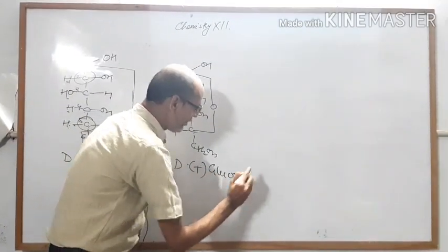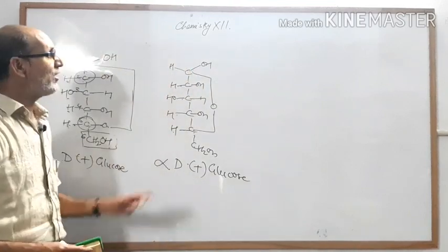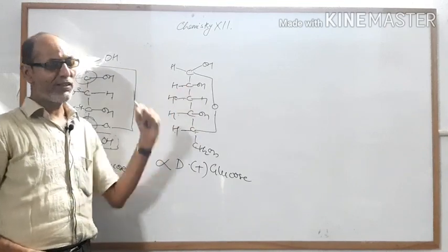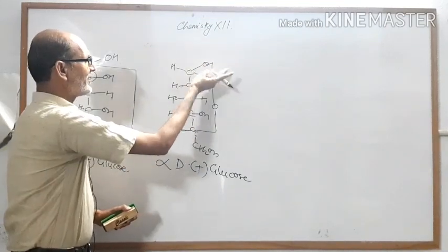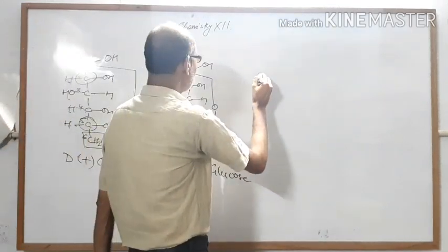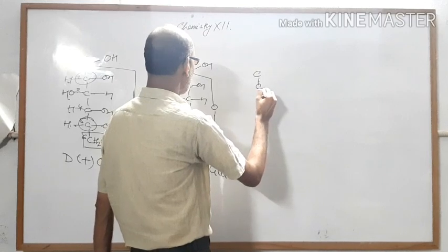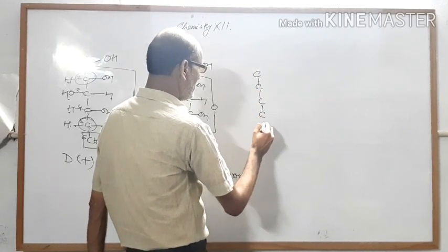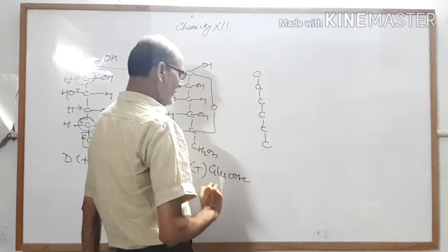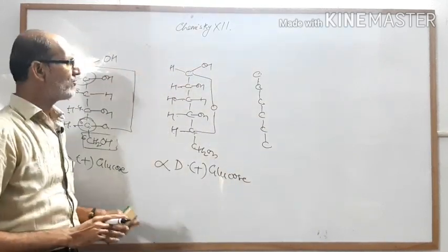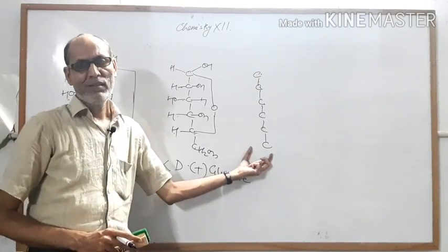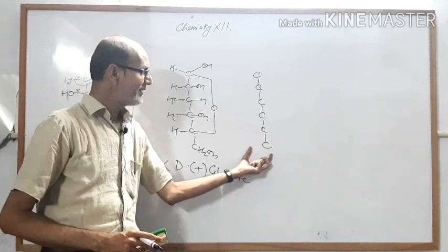At carbon number three, H is on one side and OH on the other. At carbon number four, OH is on the left side, indicating D. So this is alpha-D-plus glucose in the Fischer projection formula. Now you have to complete the beta structure — draw the structure of beta-D-plus glucose according to the Fischer projection formula. That is your next question.